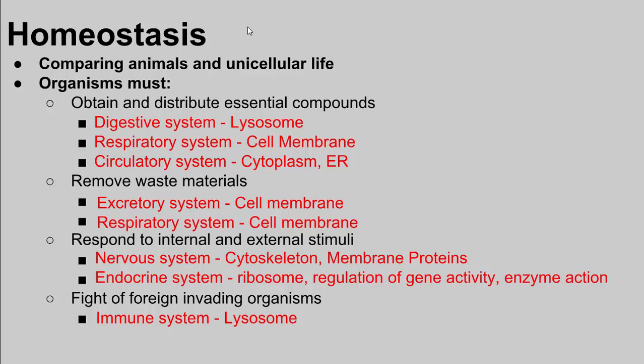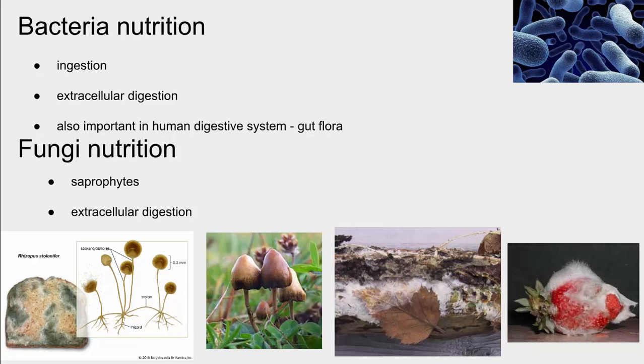They need to fight off invading foreign pathogens. So what we're going to do is talk about each of those things and compare them between a whole variety of organisms — how do plants do this, how do mushrooms accomplish this, how do humans accomplish this. We'll use different organisms as representatives to compare how different types of living things accomplish each of these. We'll start at the simplest organisms and build our way up to more complex, starting with obtaining nutrients.